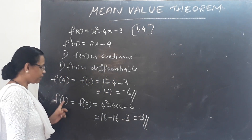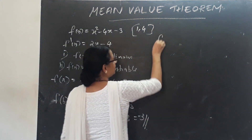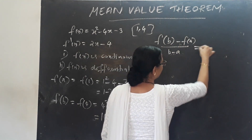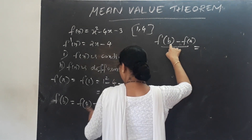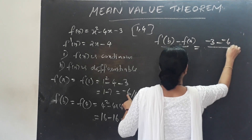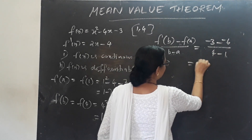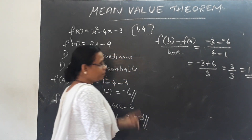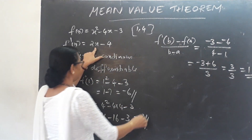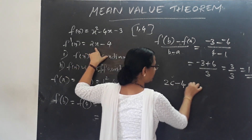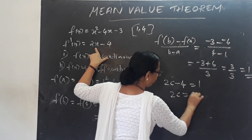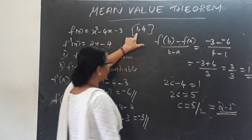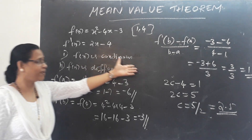Applying the Mean Value Theorem: [f(B) − f(A)] / (B − A) = (−3 − (−6)) / (4 − 1) = 3/3 = 1. Setting F'(C) = 2C − 4 = 1: 2C = 5, so C = 5/2 = 2.5. Since 2.5 lies in (1, 4), the Mean Value Theorem is verified.